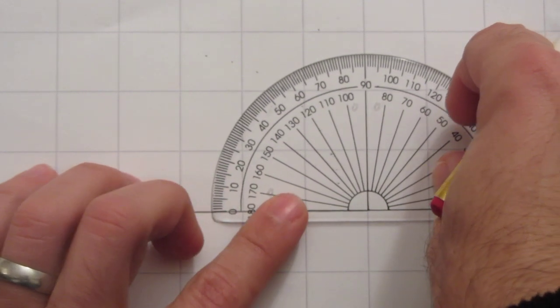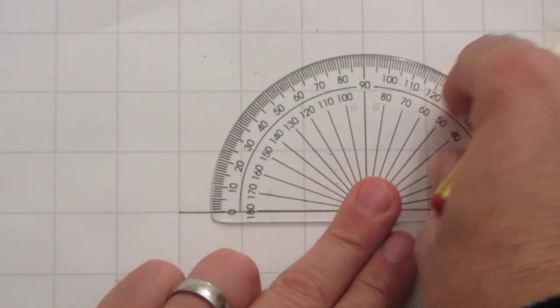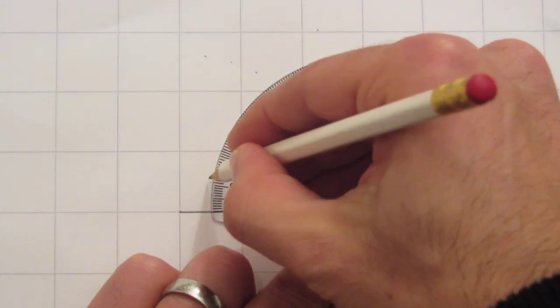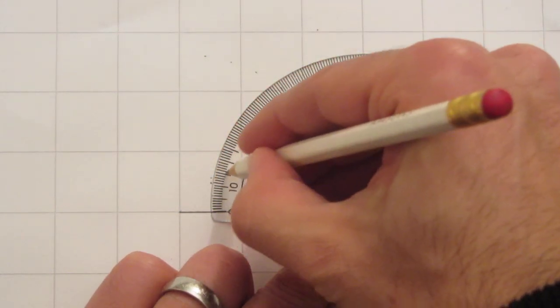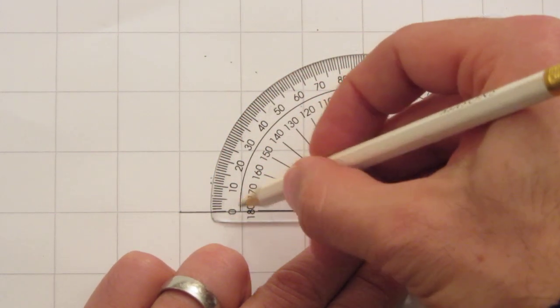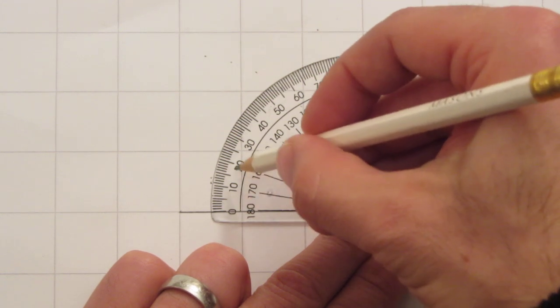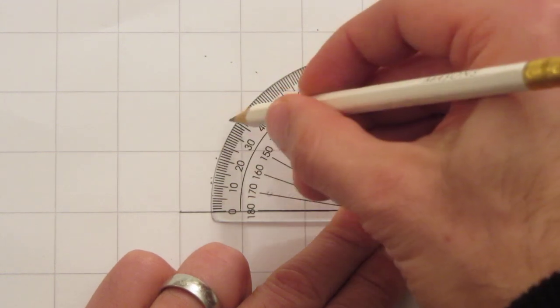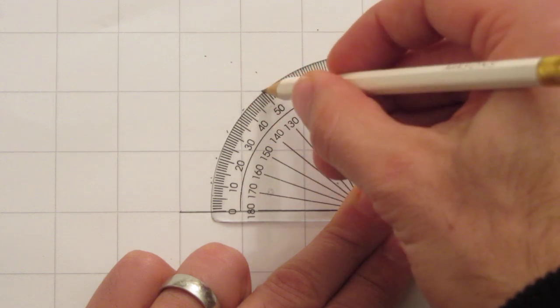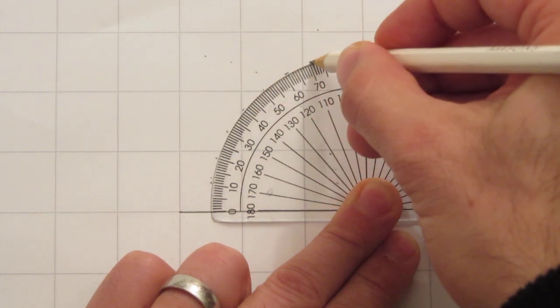the protractor over there, and that would be 10 degrees. Now I'm counting from this zero because this zero is on the line: 20, 30, 40, 50, 60, 70, 80. Then to join or to draw the actual angle, if I was going to go with a 30-